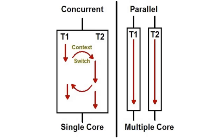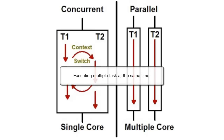A lot of developers have confusion around Concurrency and Parallelism. Many developers think that Concurrency and Parallelism mean one and the same thing — that both mean executing multiple tasks at the same time. This definition is 50% right, but we need to add more to it.